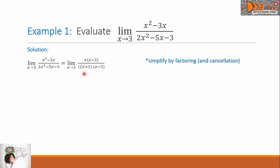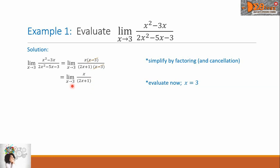From here, we can see that there is a common binomial in the numerator and in the denominator — that is x minus 3 — which we can cancel out. The function is now simplified into x all over 2x plus 1. We can now evaluate by substituting the value 3, giving us 3 all over 2 times 3 plus 1. Since 2 times 3 is 6, and 6 plus 1 is 7, our final answer is 3 over 7.